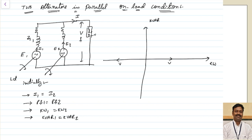The I component in phase with the voltage leads to active power; the I component out of phase with the voltage leads to reactive power — we are going to use that concept here. Let us assume the value of I1 is here, and I2 is also equal to I1. I2 is taken in the opposite direction within this loop. I1 makes angle phi1 and I2 makes angle phi2. Since power factor 1 equals power factor 2, phi2 equals phi1, and I1 equals I2.